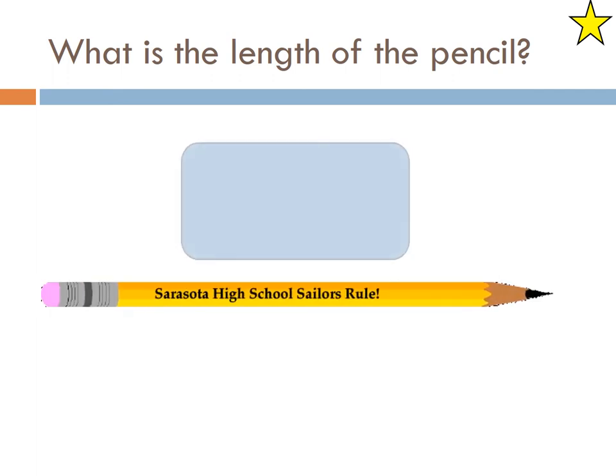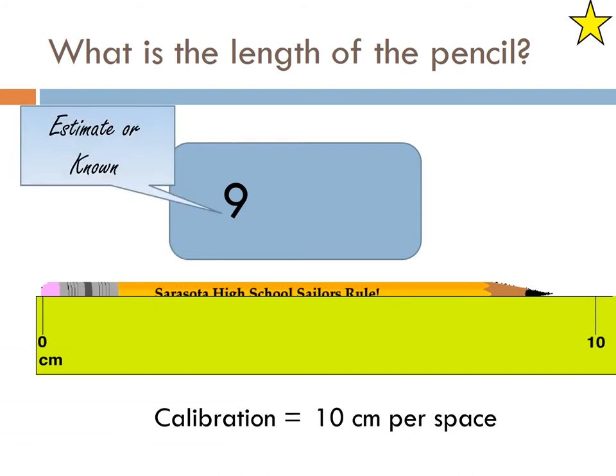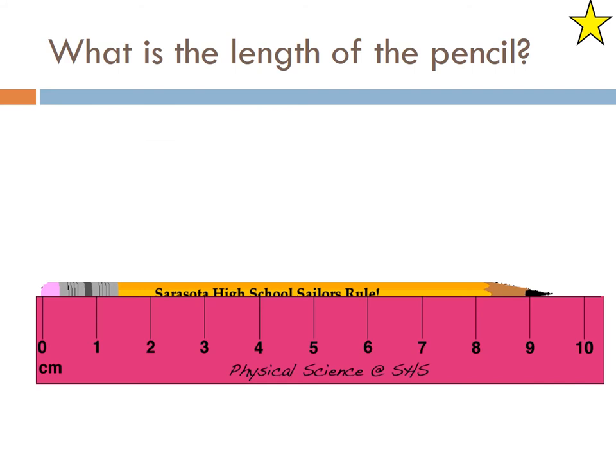So what is the pencil length? In this case we calibrate the difference between, there's only two numbers, 0 and 10. So it's 10 centimeters per space. How many spaces are there? One. So it's 10 centimeters per space. And this is an estimate or a known? Well, it's pretty much just an estimate because you don't really know. It's always going to be approximately 9. So it's not a certainty. Unit: centimeters.